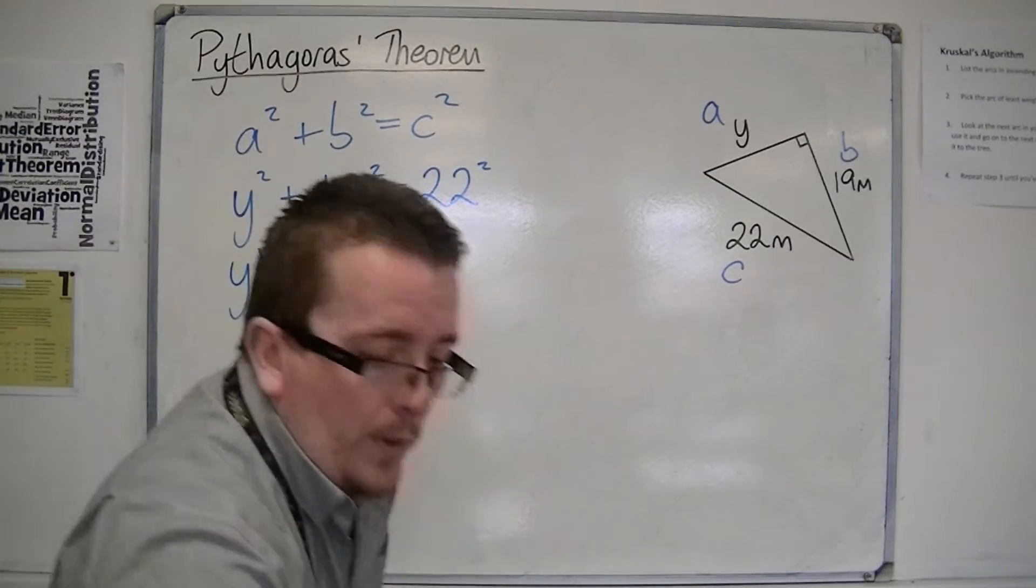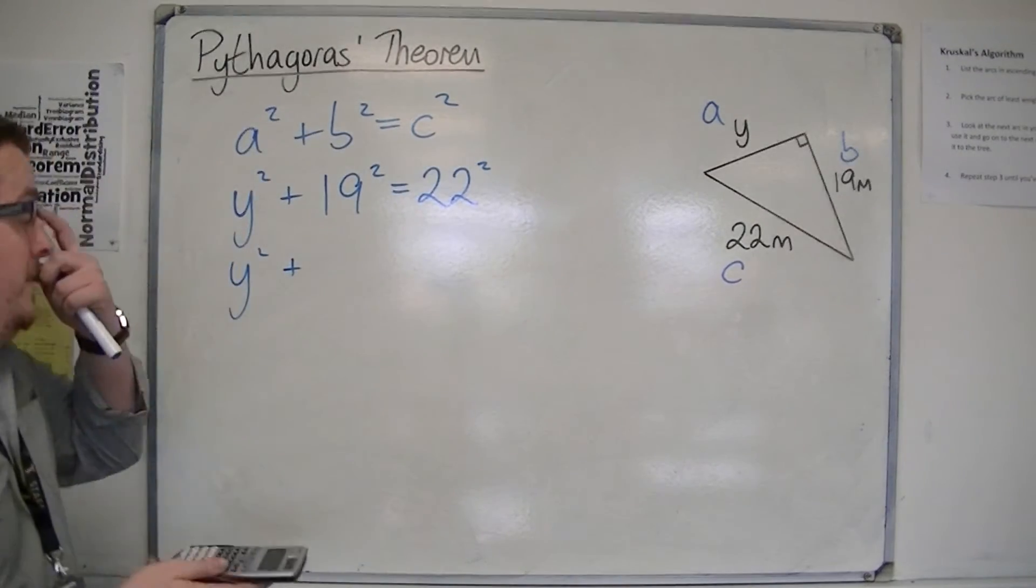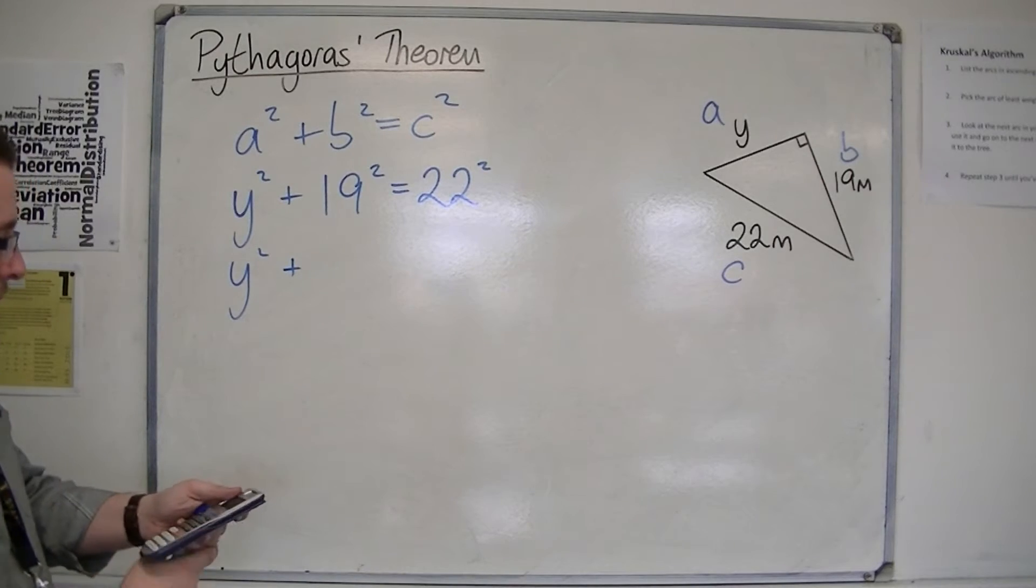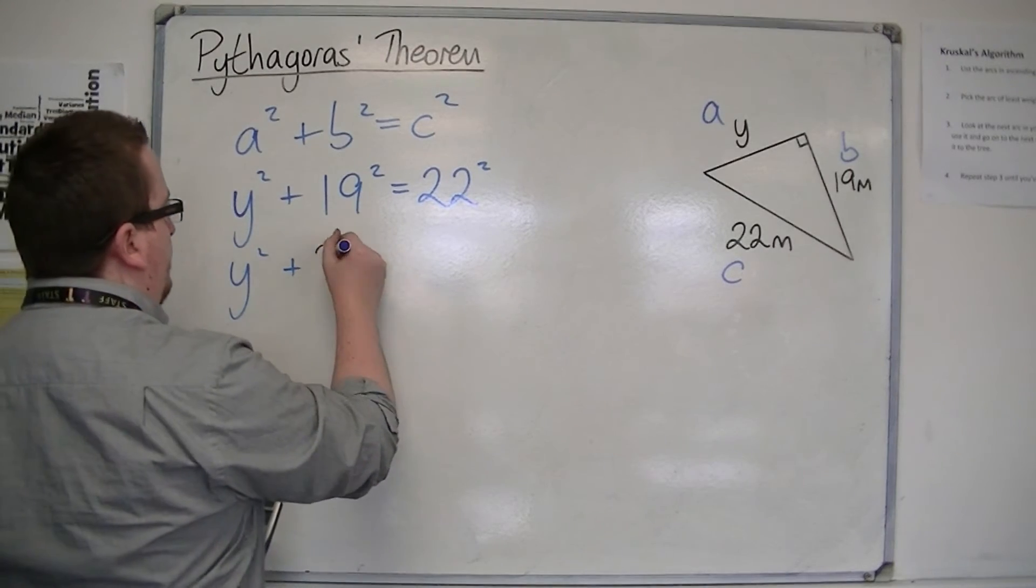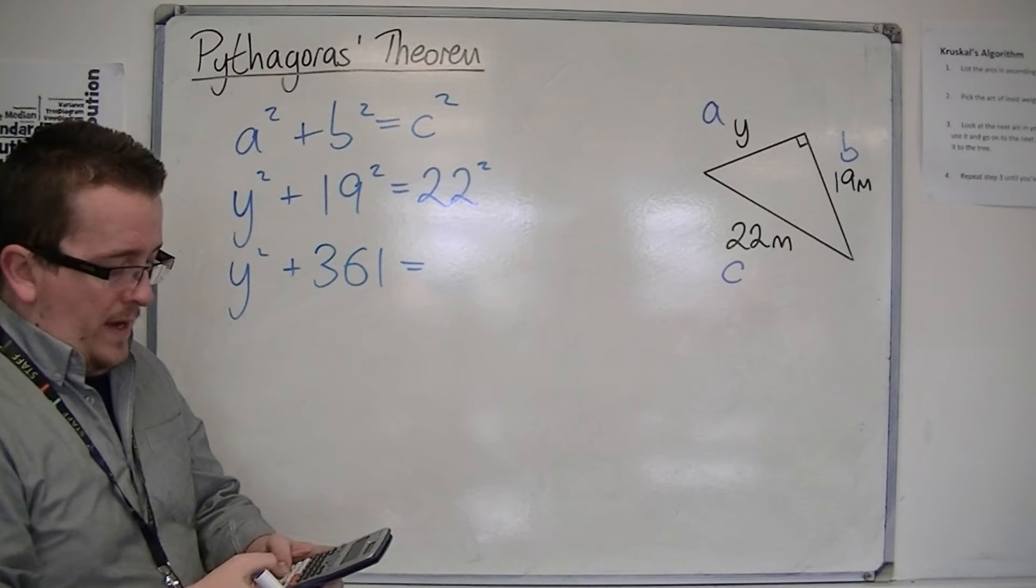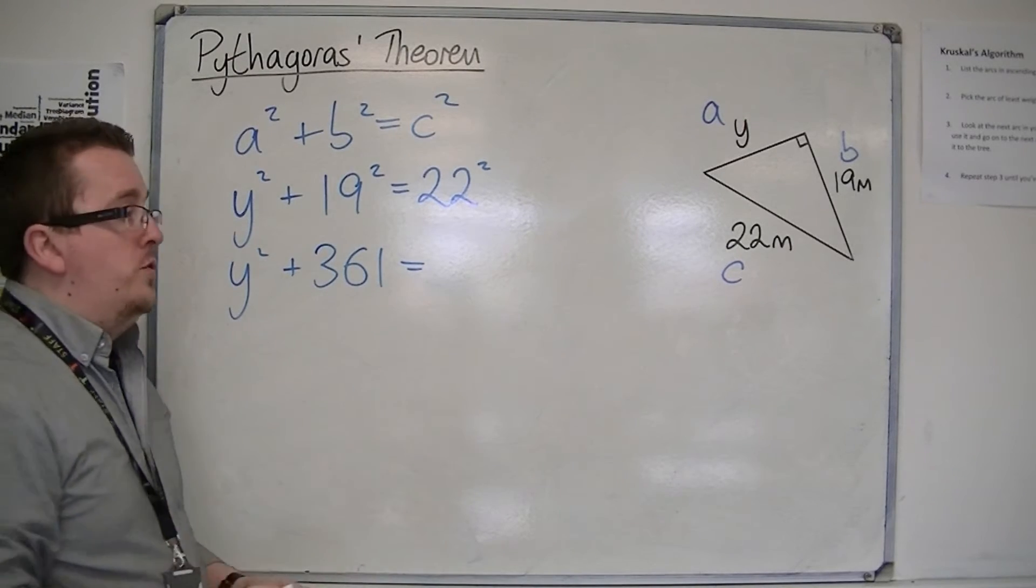Right, 19 squared and 22 squared aren't ones I have in my head, so 19 squared is 361, and 22 squared is 484.